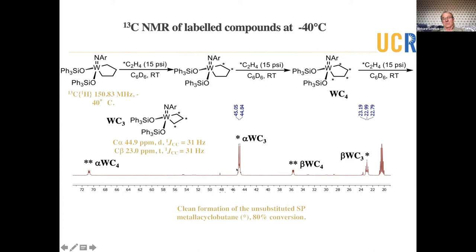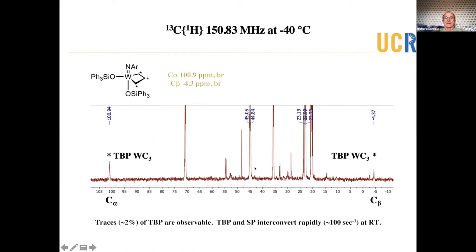Those broad peaks turn out to be a signal characteristic of an alpha carbon and a metallicyclopentane. Square pyramidal metallicyclopentane. This one over here. And a beta carbon, a triplet here at around 23 parts per million. So 23 and 45 parts per million are the metallicyclopentane. And these little doublets here are the starting metallicyclopentane. So this reaction is about 80% complete.